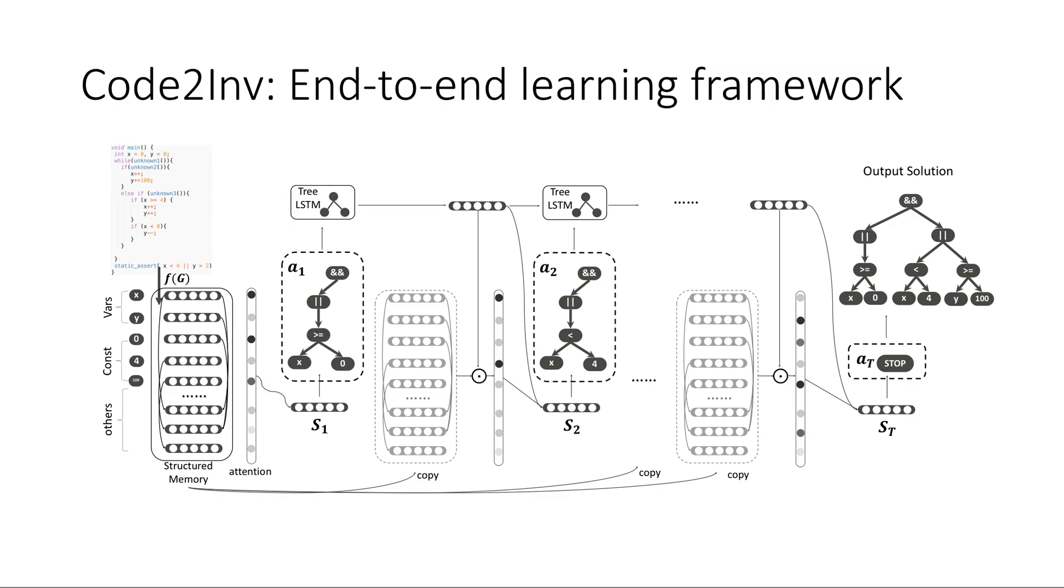Here is our framework. In each step, the policy network generates a predicate, which is a part of the final solution. Besides the final smooth reward we just talked about, we also provide intermediate reward to guarantee the validness of the predicates.